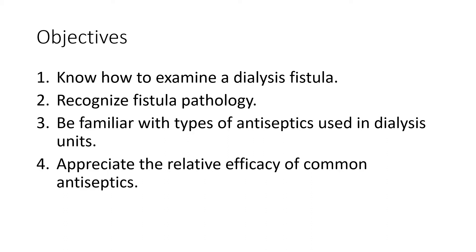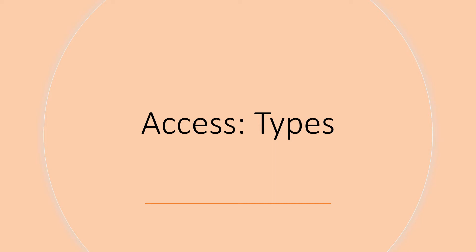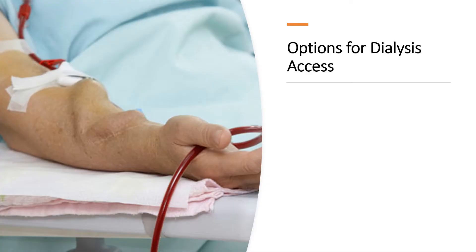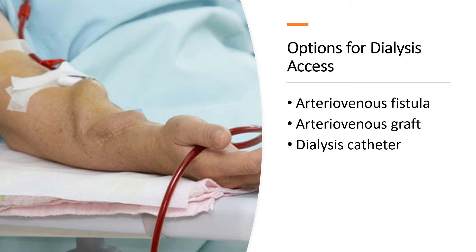The fourth objective is to appreciate the relative efficacy of common antiseptics. Let's begin with a review of the three types of dialysis access available. You are all very familiar with the three types: arteriovenous fistula, arteriovenous graft, and a dialysis catheter. Which access is placed depends on factors such as the urgency of dialysis, the quality and size of veins in the patient's arms or legs, and the patient's overall health condition.